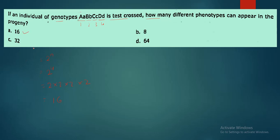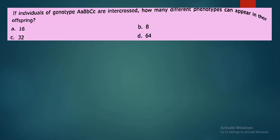If an individual of the genotype A, B, C are intercrossed, how many different phenotypes appear in their offspring? Again, you calculate the phenotypes. In the formula of phenotype, we have 2 raised to n.